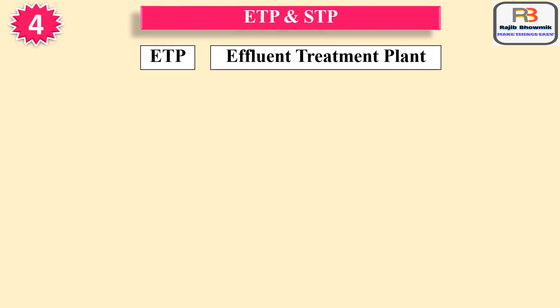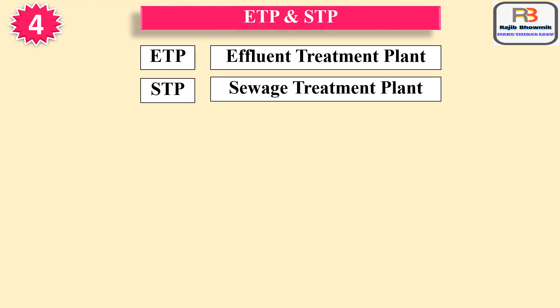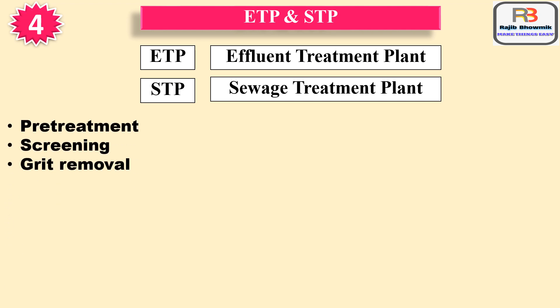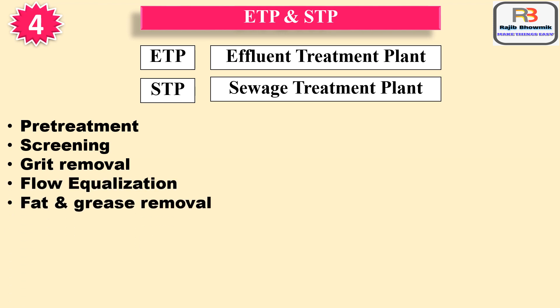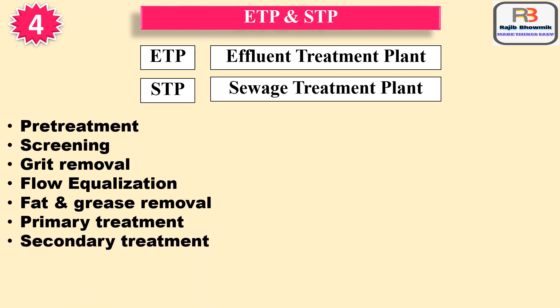Number four is ETP and STP. ETP means Effluent Treatment Plant for treatment of industrial waste water. STP means Sewage Treatment Plant for treatment of household waste liquids from toilets, baths, showers, kitchens, sinks, etc. Various steps of ETP and STP are: pre-treatment, screening, grit removal, flow equalization, fat and grease removal, primary treatment, secondary treatment, and tertiary treatment.